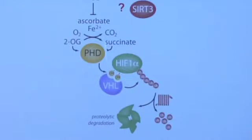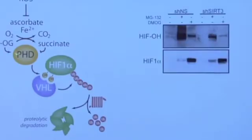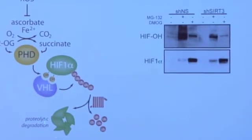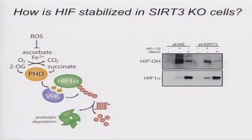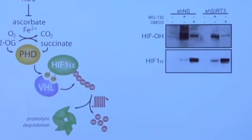So how is HIF stabilized in SIRT3 knockout cells? This took us a long time to work out. We were very interested in how PHD function was regulated. To probe whether PHD was involved, we looked at HIF-1 alpha hydroxylation levels using the presence or absence of MG132, an inhibitor of the proteasome, or DMOG to inhibit PHD function. In SIRT3 knockout cells, there was a dramatic decrease in the level of HIF hydroxylation, suggesting that the regulation was upstream.